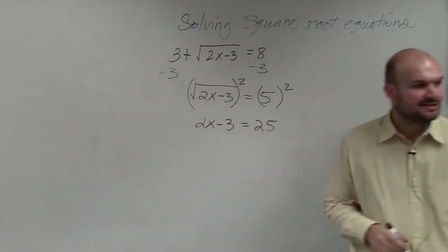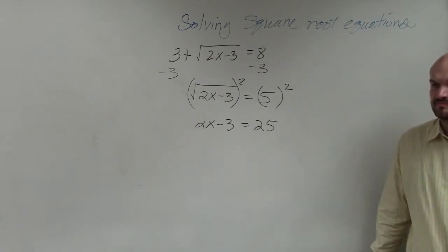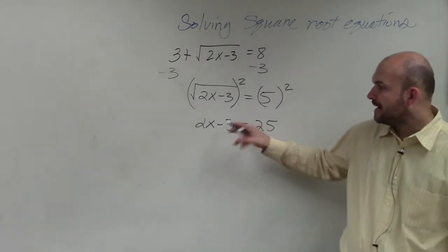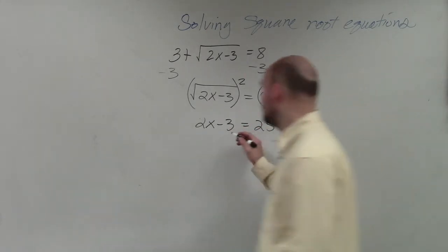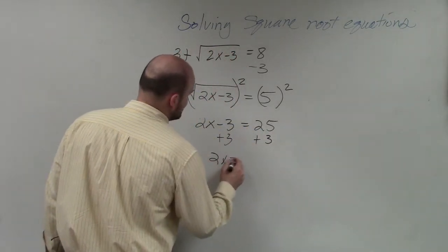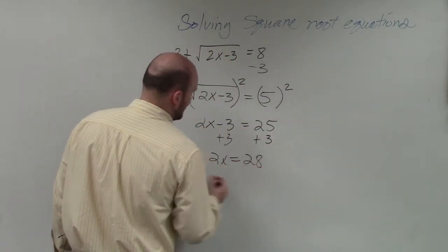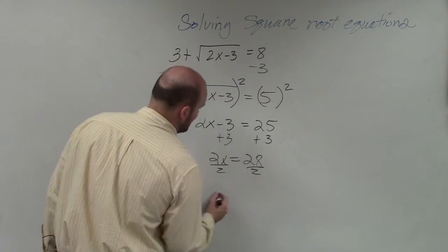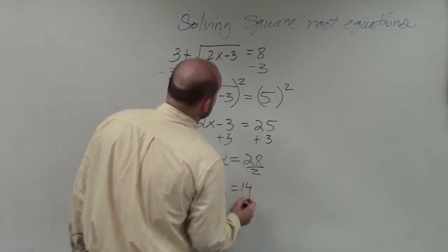Does everybody see how I got to the next step? All I did was I squared both sides. Now, we're simply going to go ahead and solve. So I'll add 3. I have 2x equals 28, divided by 2, x equals 14.